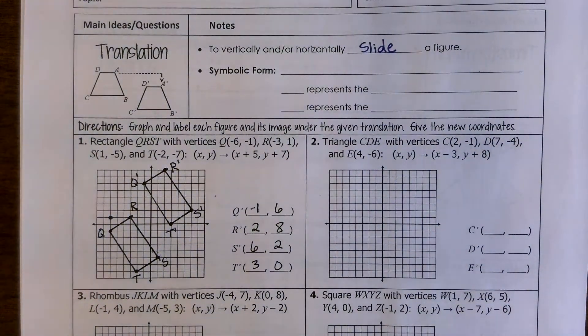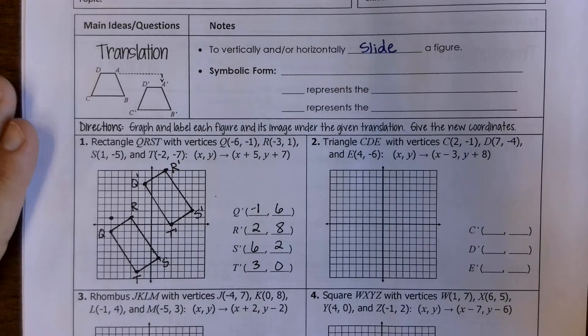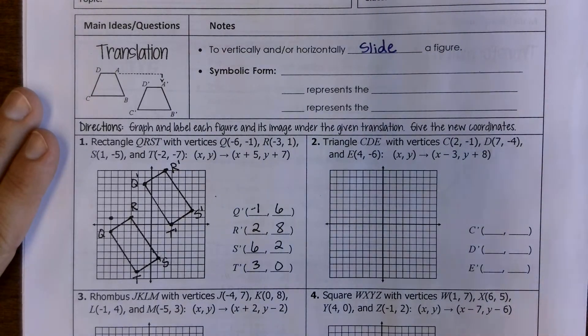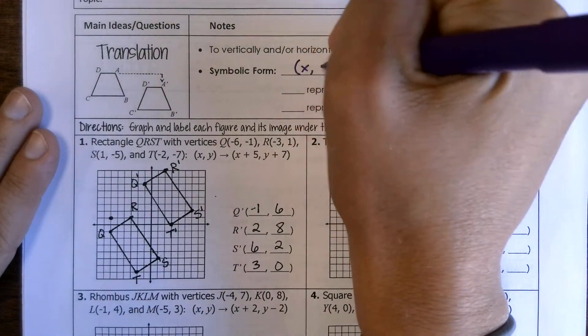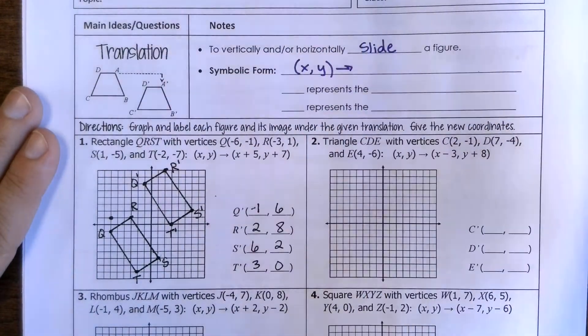Now for all of these transformations they have different ways of directing you how they're going to transform it. So with the reflections it would say x-axis or y-axis or give you a different line to reflect over. For a translation they're going to tell you that x and y, and they'll give this arrow,